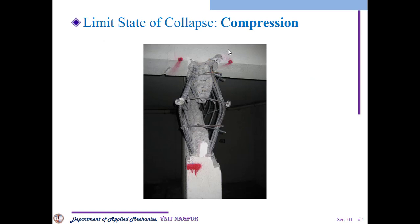Now, the limit state of collapse in compression works like this. Compression means we are applying forces in toward directions, due to which the size may get increased or decreased respectively. We are applying the load — our dead load is acting on a body — and the overall section cannot carry that particular load and it is not parallel to the plane, which is why the section may fail.